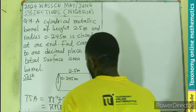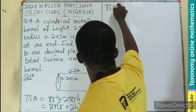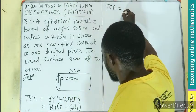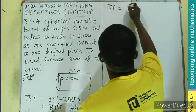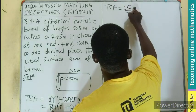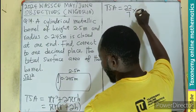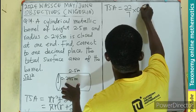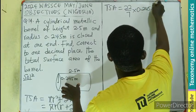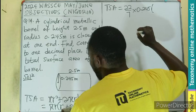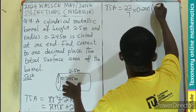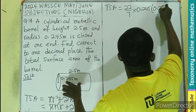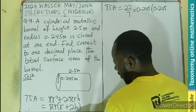We can substitute and say that total surface area will be equal to π, which I think we take as 22 over 7, times the radius which is 0.245 into brackets: r which is still 0.245 plus 2 times the height.